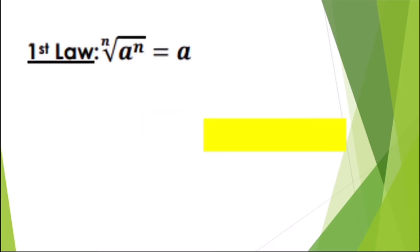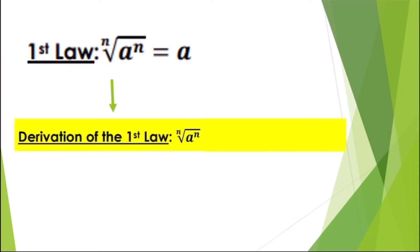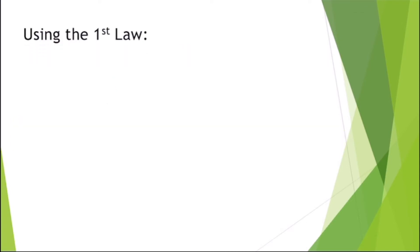Let's proceed to the first law. We have the n-th root of a raised to n is equal to a. For the derivation, the n-th root of a raised to n equals a raised to n times one over n. Since we can multiply the exponents, we have a raised to n over n, which equals a raised to one, or simply a.